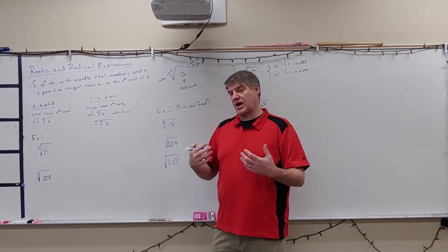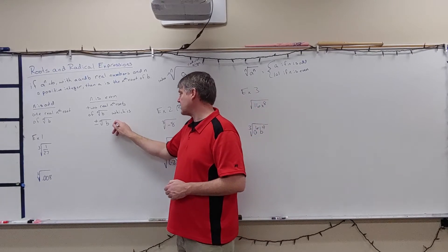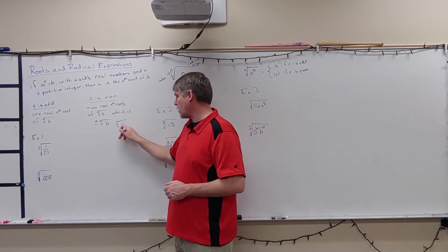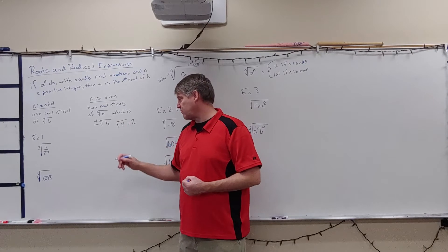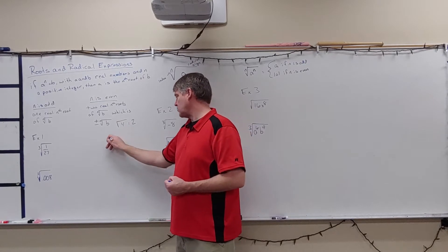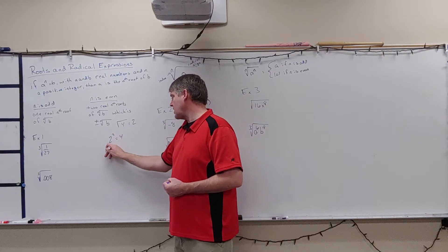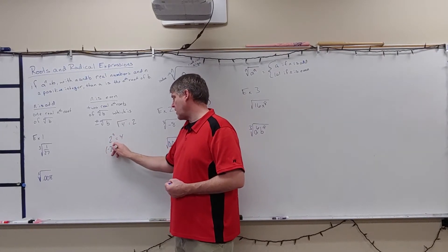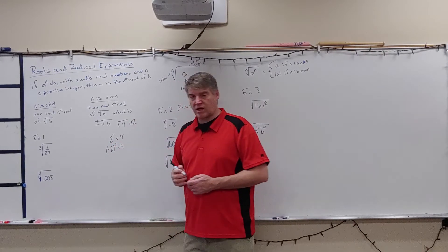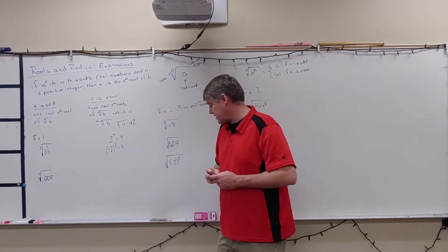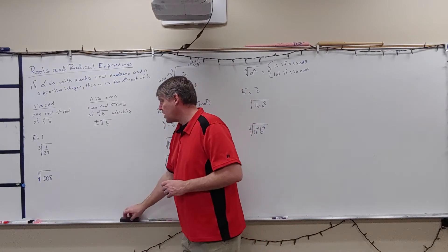For example, if I look at the square root of four, I know that's two because two times two is four, so two squared equals four. But negative two squared also equals four. So this actually gives me a plus or a minus there.